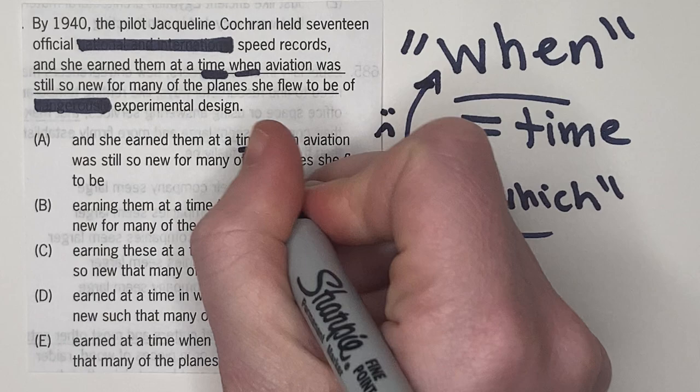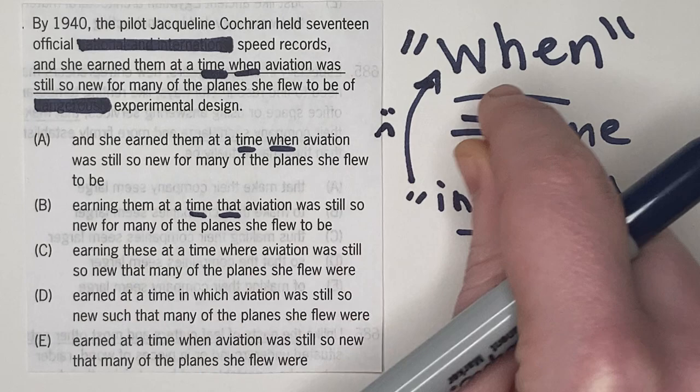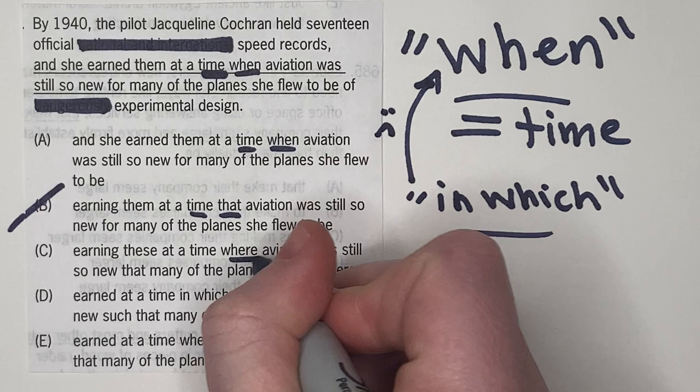So time when, maybe a time that? No, that is incorrect. You wouldn't say time that. That does not describe time, only when describes time. So B would be out.